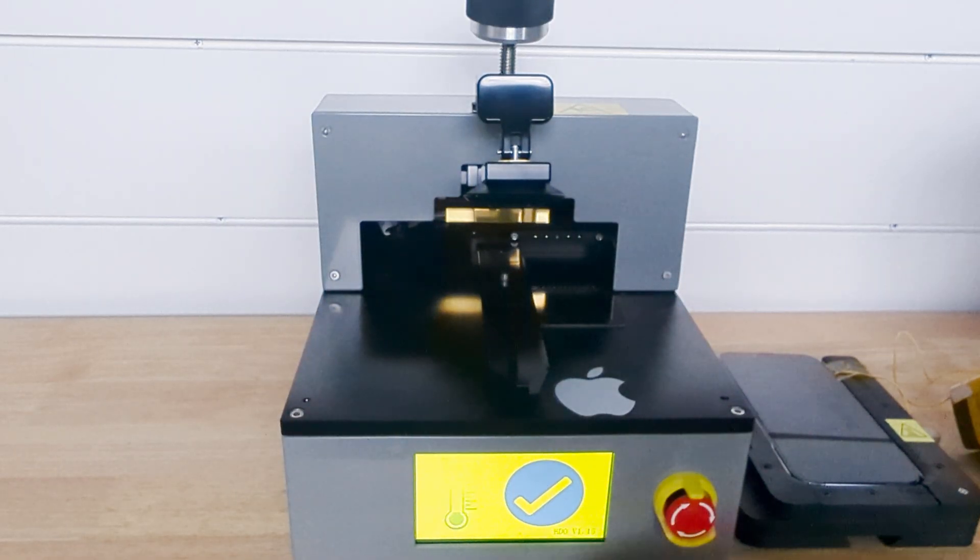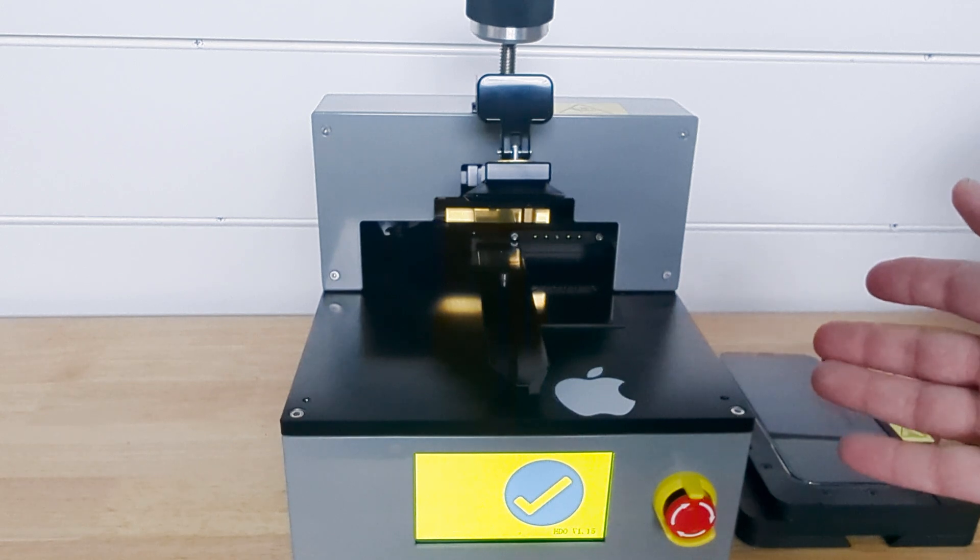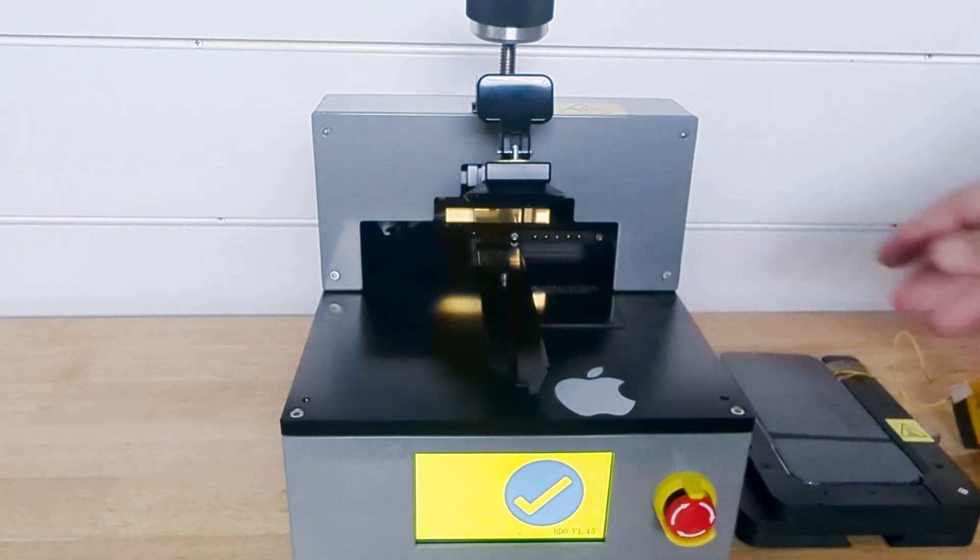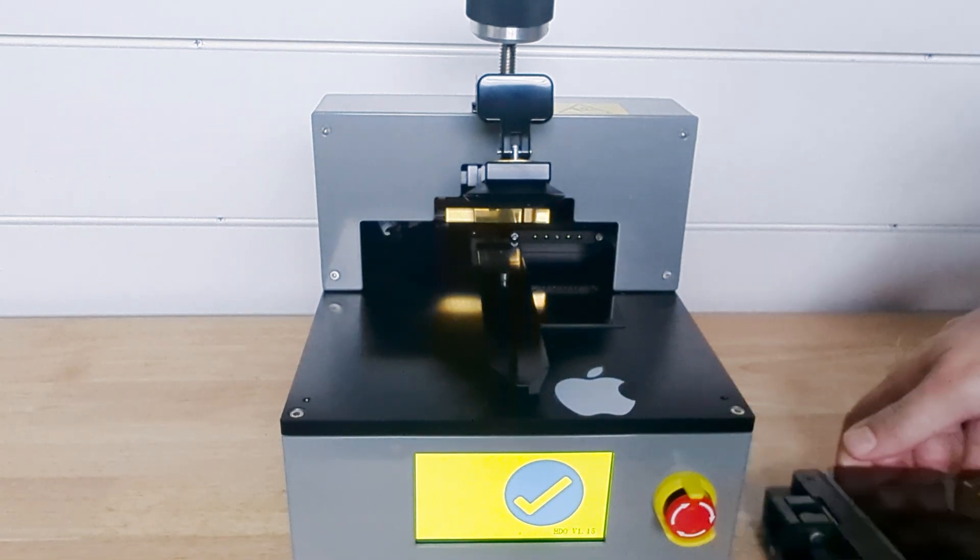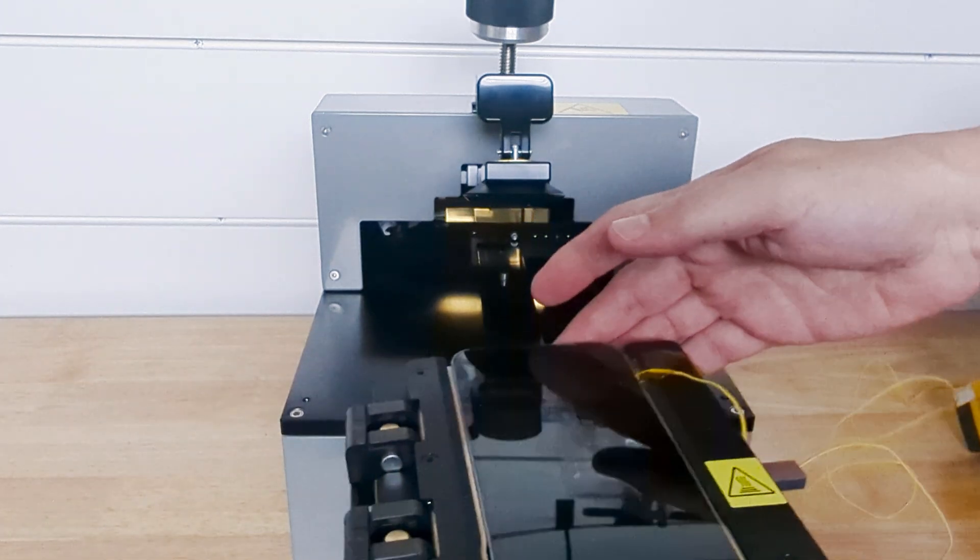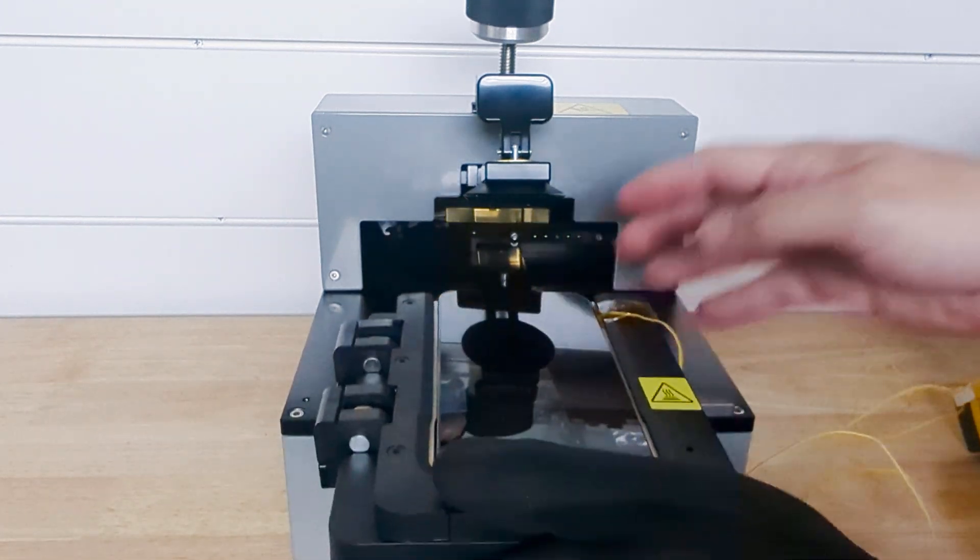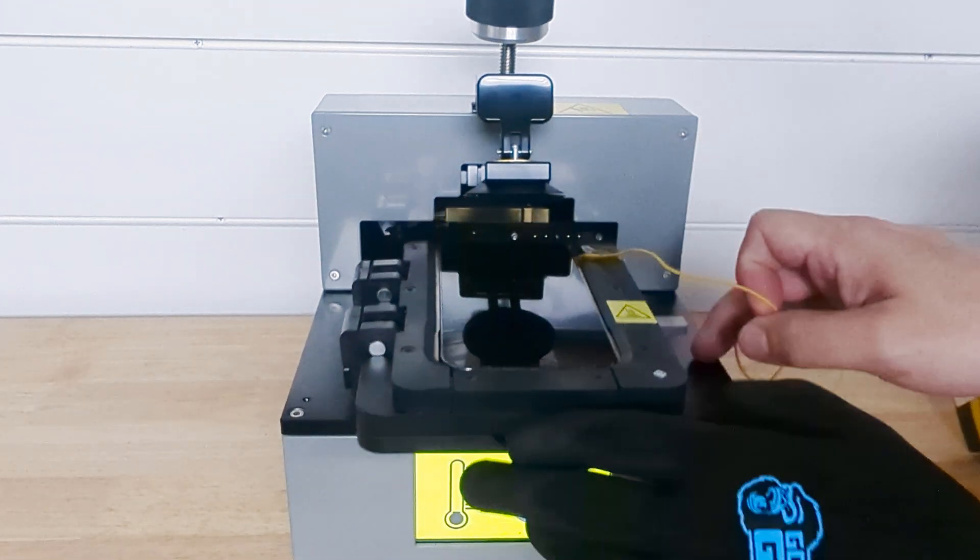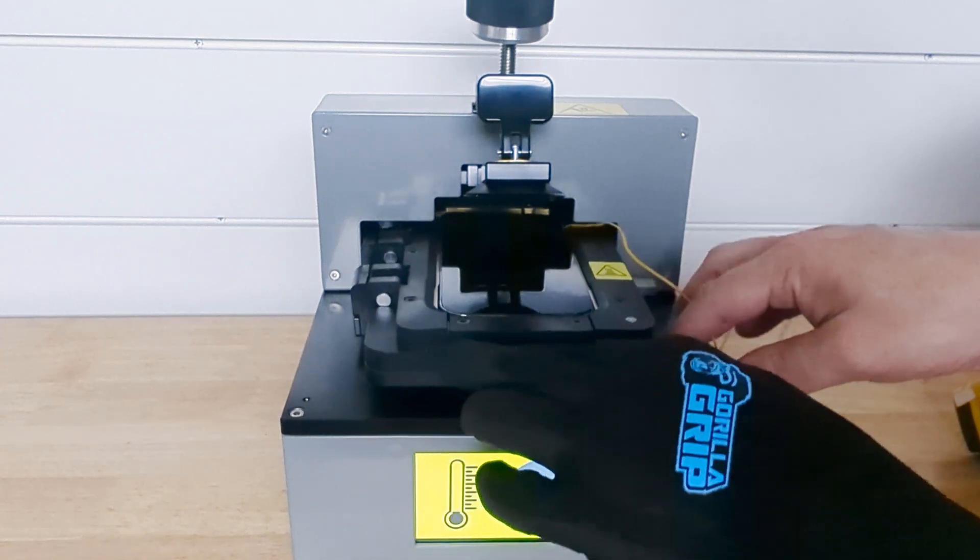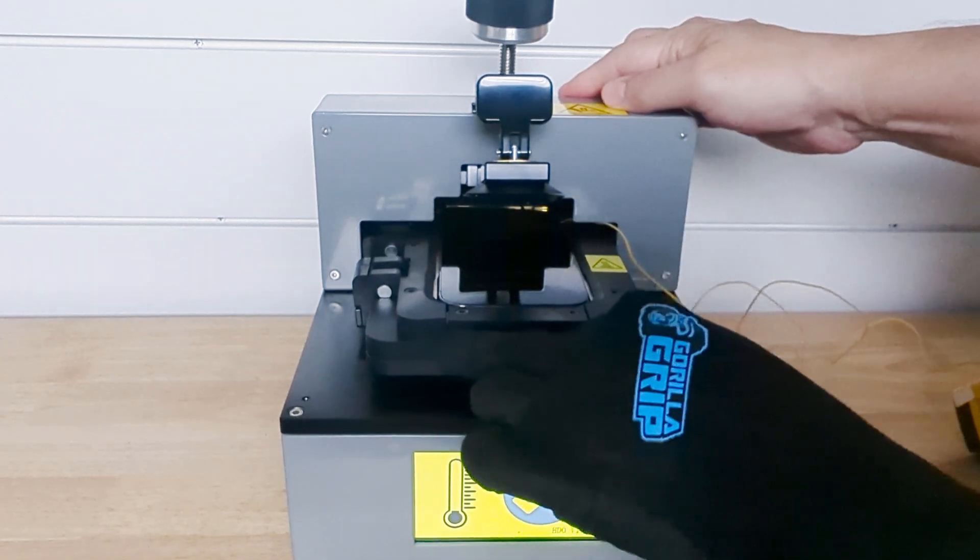All right, our machine is ready. We got our check mark. We turn it on, wait about 30 seconds so it starts to warm up, and we can slide our phone in there. And we're going to hear a click. There we go.